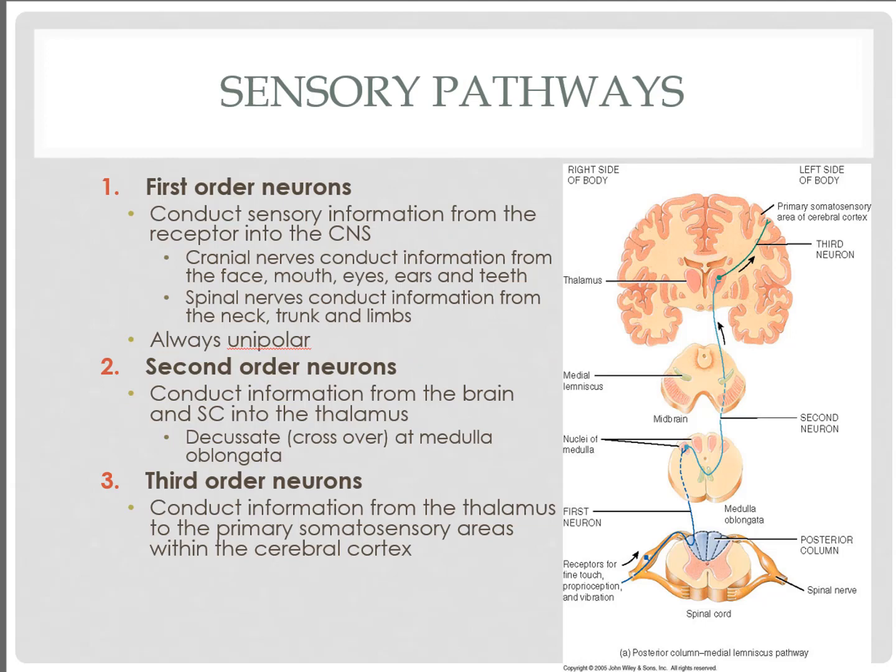When we look at the sensory pathways — everything from our sensory neuron all the way to the cerebral cortex — we're always going to follow the same set of pathways. This is a group of three neurons: first order neurons, second order neurons, and third order neurons that take sensory information to a specific area in the cerebral cortex. There is one exception involving the olfactory system, which we'll discuss later.